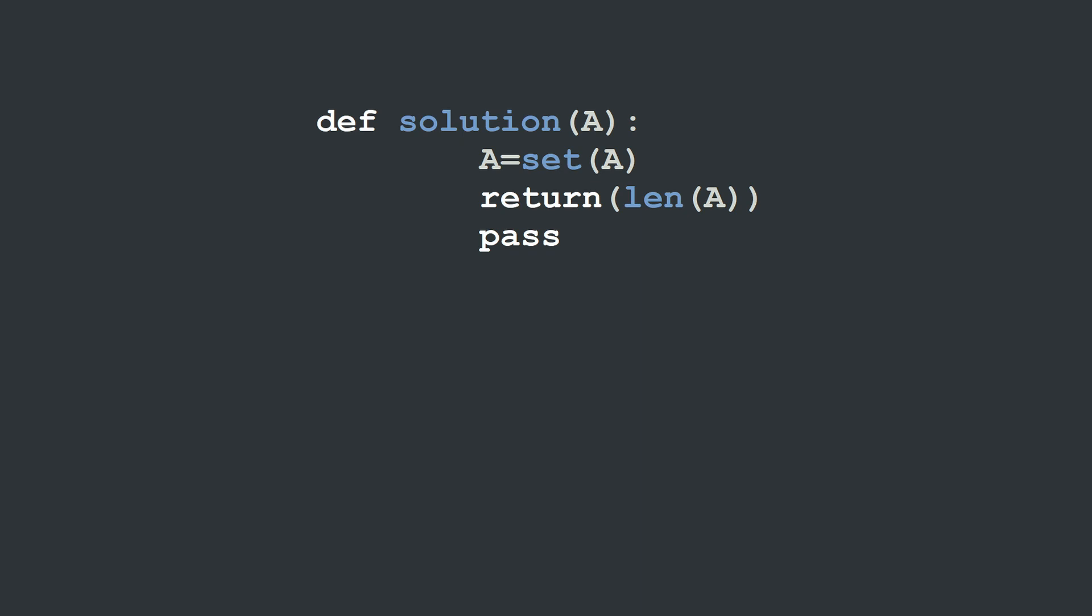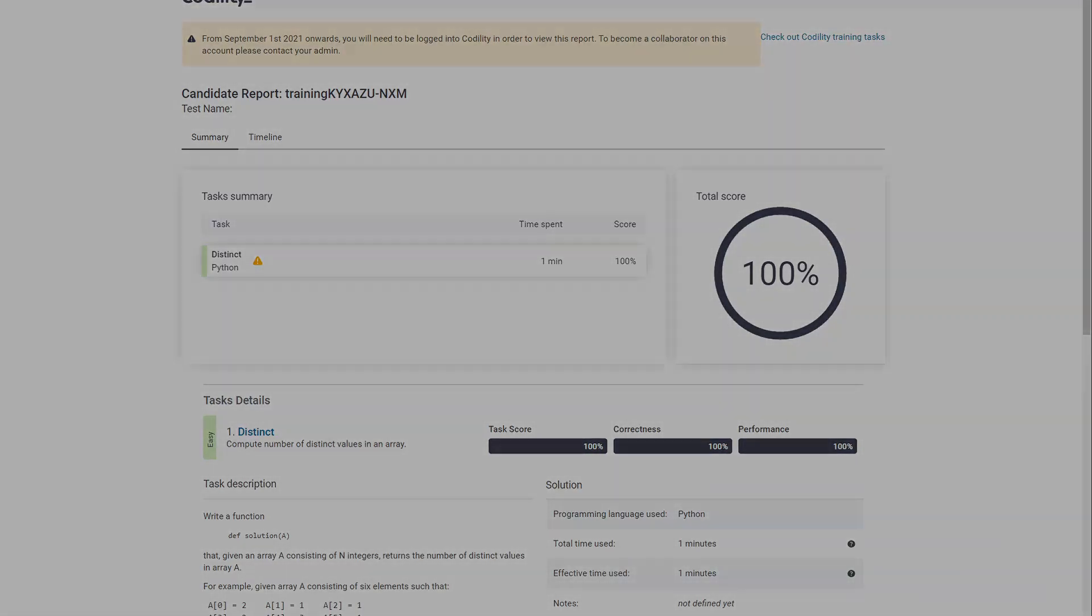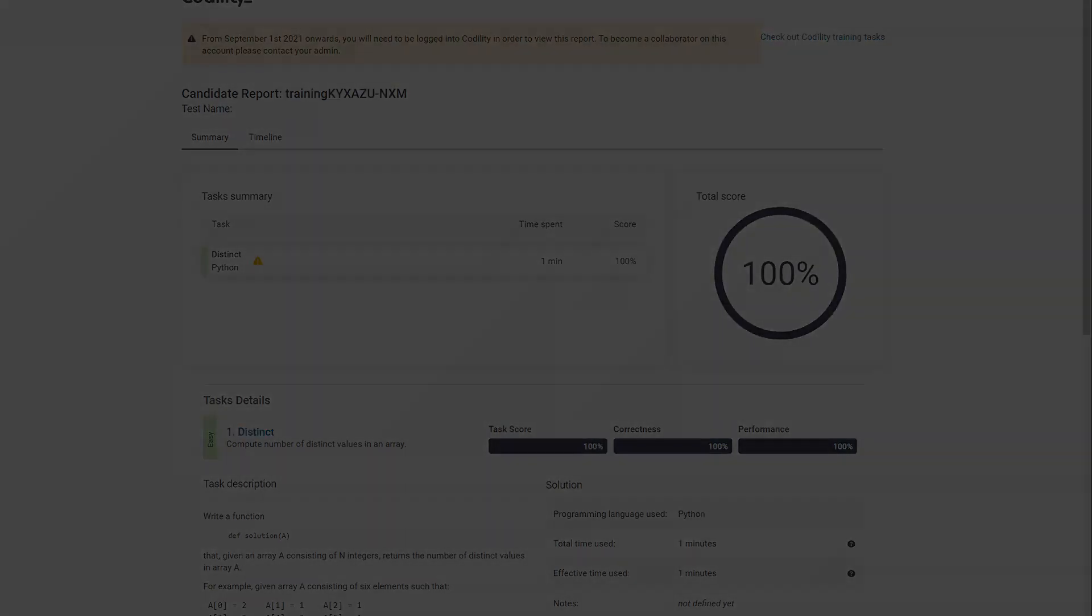So we can simply return the length of A at this stage, and that's it, actually two lines of code and we're done. Didn't even take two seconds. It would surely give you 100% score. So that's it. That's all I have to tell you about this problem. Hope you guys liked it. Stay tuned for more and happy coding!